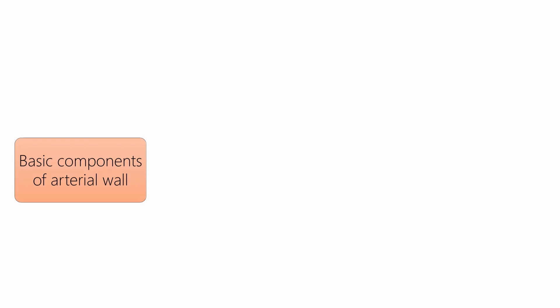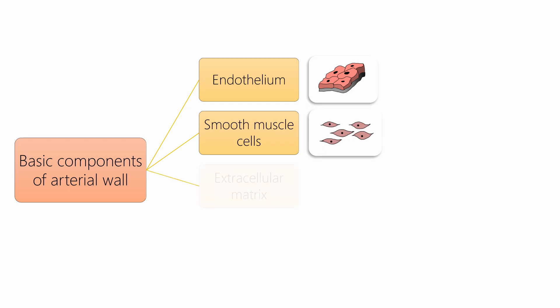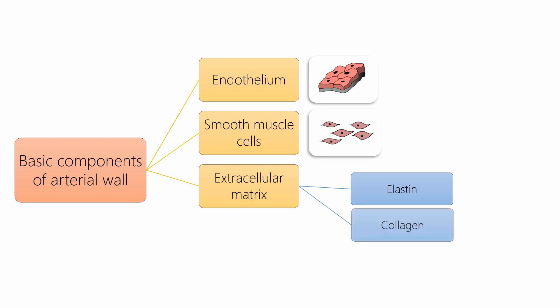The wall of the artery is made of three basic constituents, namely endothelial cells. These are a single layer of simple squamous epithelium. Second is the smooth muscle cells. And the third component is the extracellular matrix, which in turn contains varying amounts of elastin, collagen, and glycosaminoglycans.